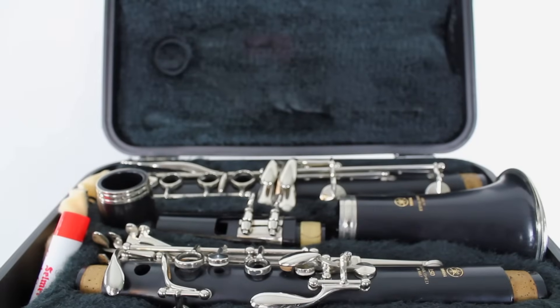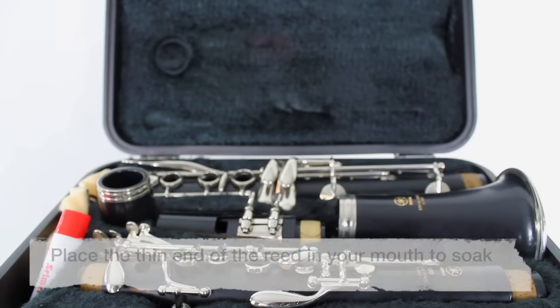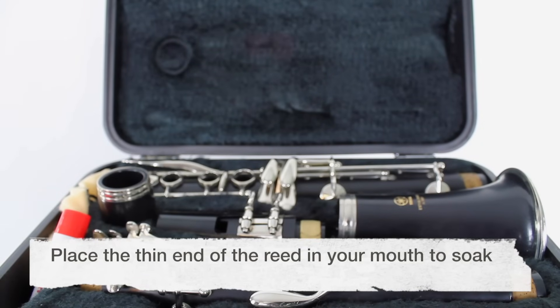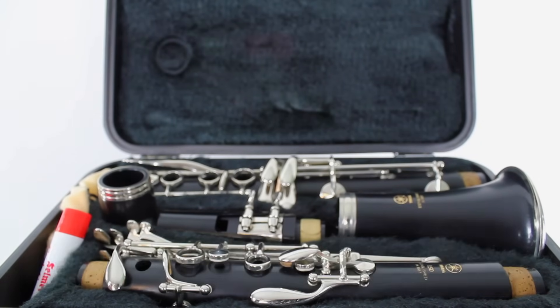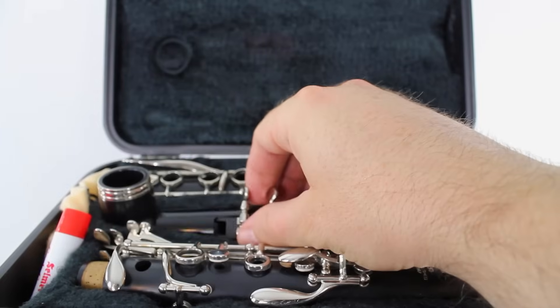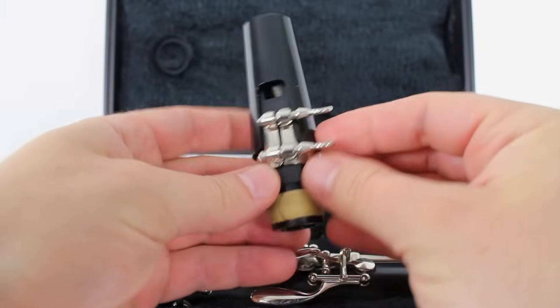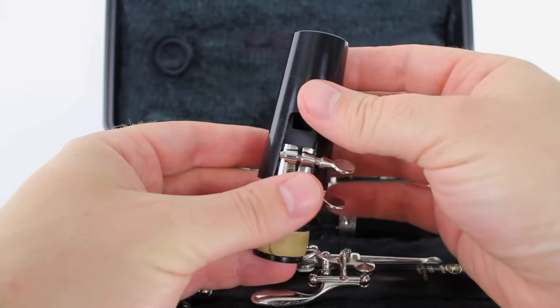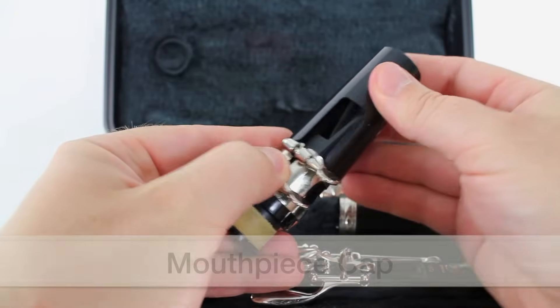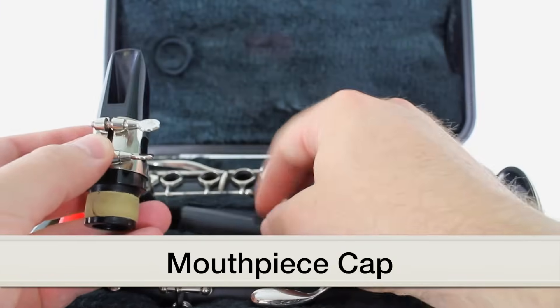So now that we know all about reeds, we're going to take our reed and place it either in your mouth or in a container of water to soak while we put together the mouthpiece and the barrel. Let's take the mouthpiece here. And you can see the mouthpiece has this helmet-looking thing on top. This is called the mouthpiece cap. We're going to take this off. We don't need it right now.